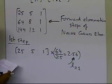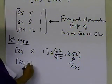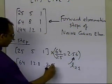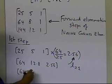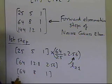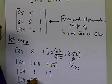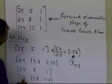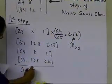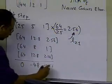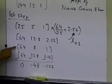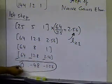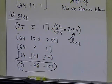Once I multiply the first row (25, 5, 1) by 2.56, I get 64, 12.8, and 2.56. I subtract this from the second row (64, 8, 1), giving 0, minus 4.8, and minus 1.56. This becomes the new second row of the coefficient matrix, with the first entry now zero.